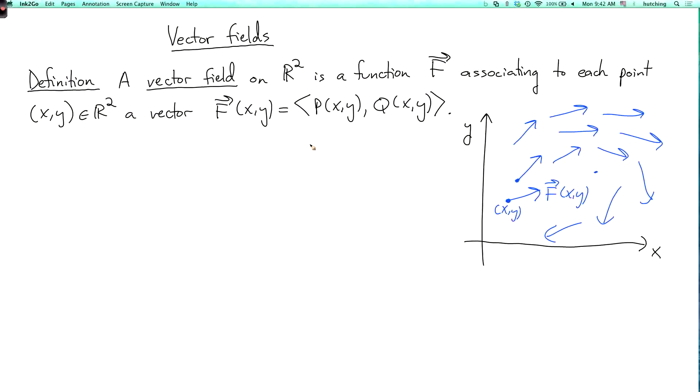The vector field on R3 is the same thing, except now you have a three-component vector at each point. So a vector field on R3. So for each point x, y, z, there's a vector f of x, y, z, and we could call its components p of x, y, z, q of x, y, z, r of x, y, z. So it's three real-valued functions or one vector-valued function on R3.